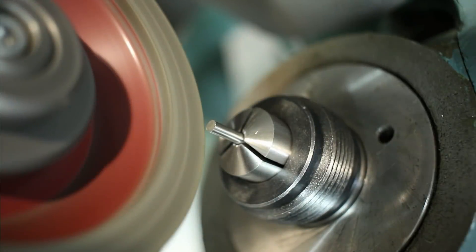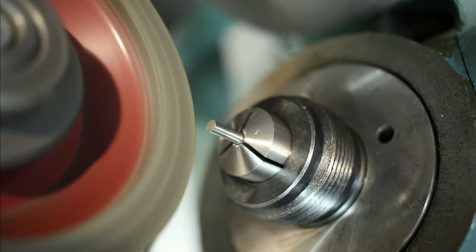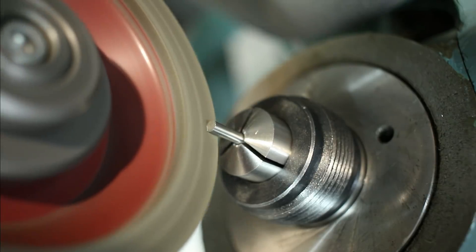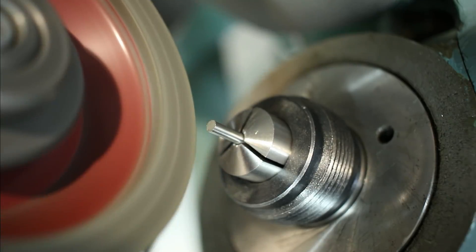I'm using a CBN cup wheel and I take relatively light cuts of about 0.05 millimeters per pass just stepping down to final dimension.